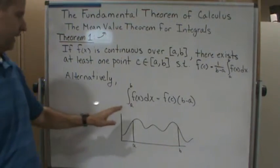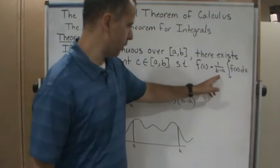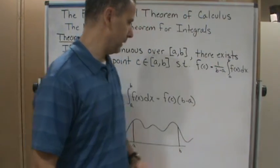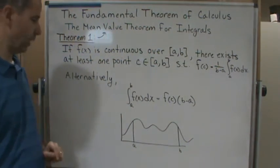Or alternatively, it could be stated this way. All I did was multiply both sides by b minus a, so you get this.